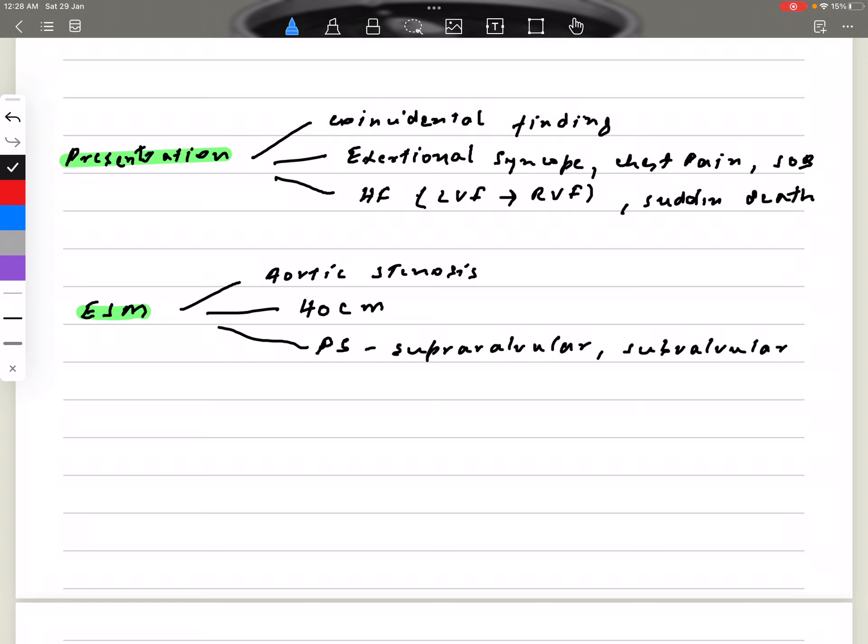Pulmonary stenosis can also present with a kind of ejection systolic murmur, whether it is supra-valvular or sub-valvular, but remember the murmur will be louder in the pulmonary area and it tends to radiate towards the left clavicle. So these are the main differential diagnoses for the ejection systolic murmur.